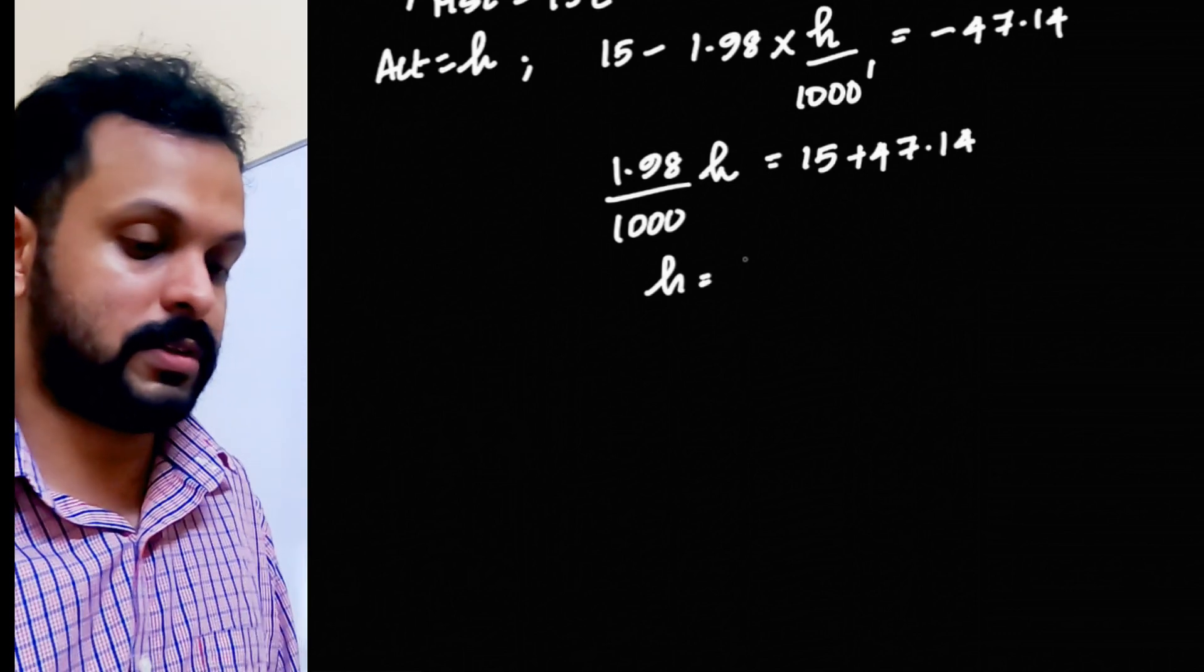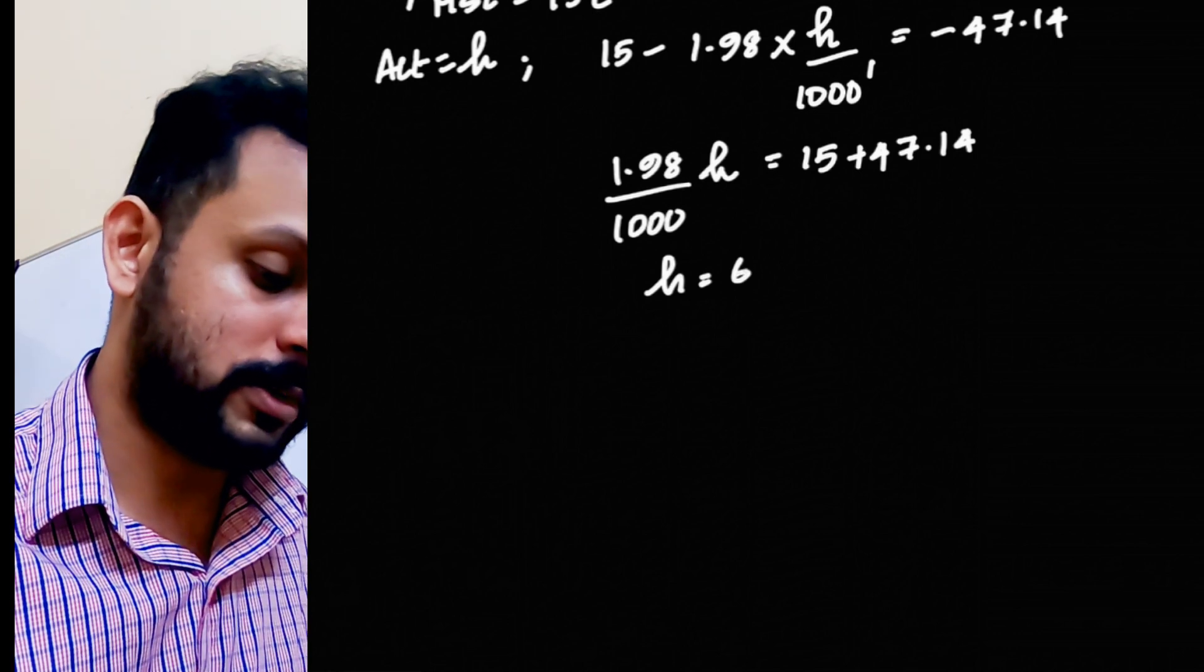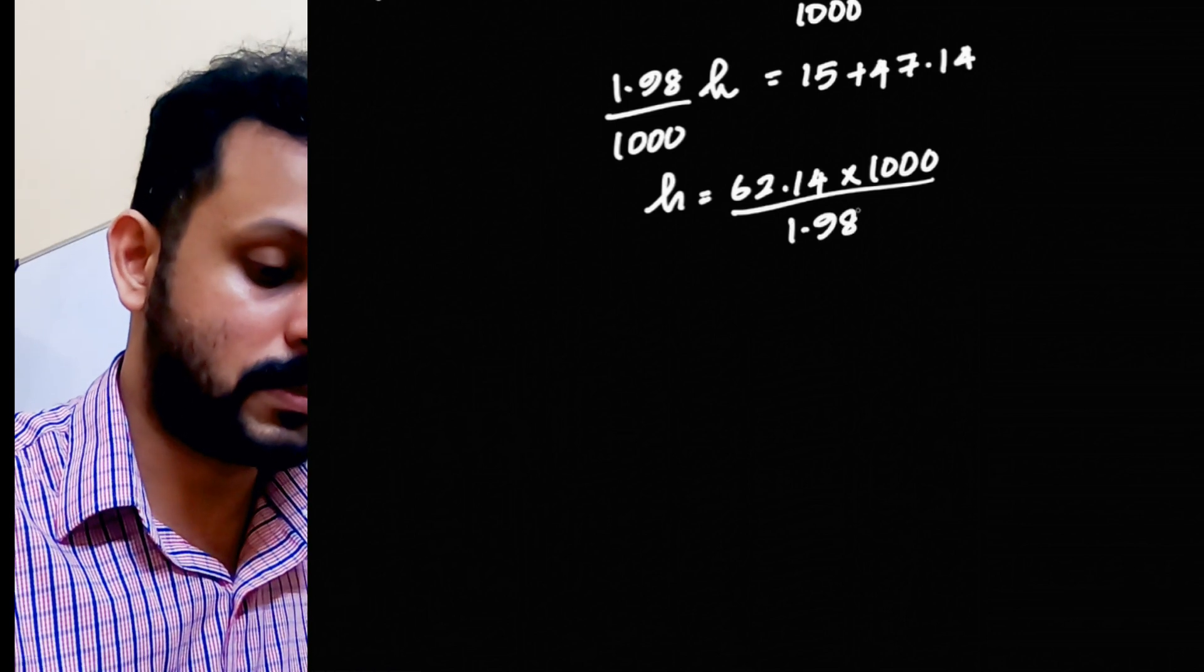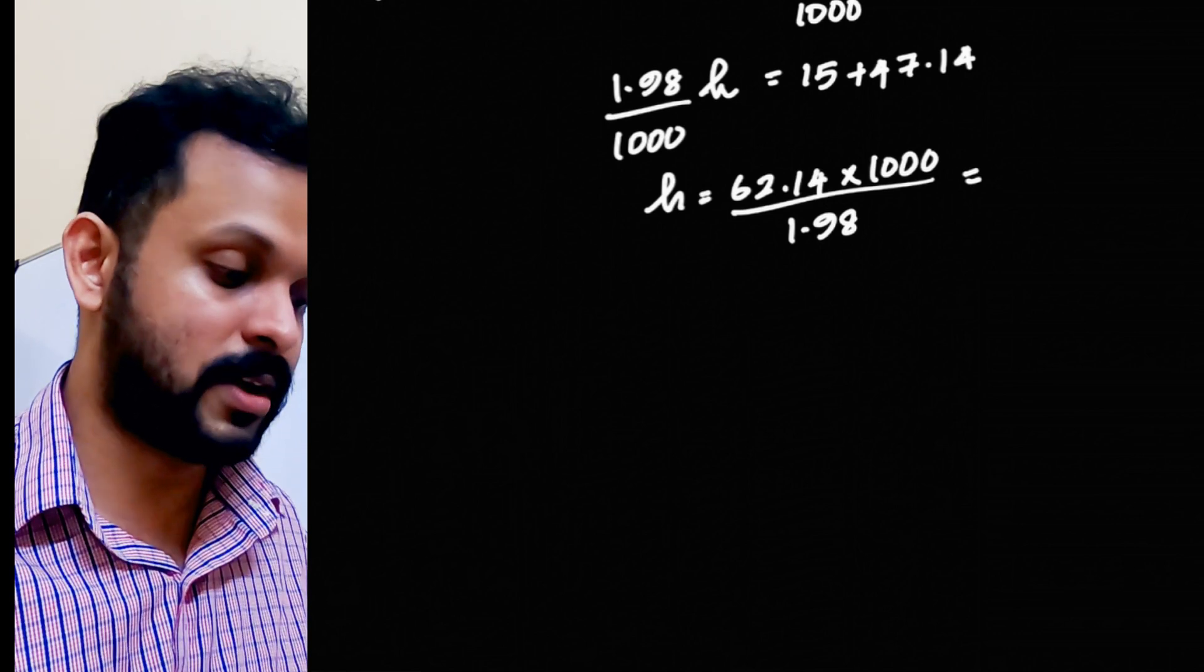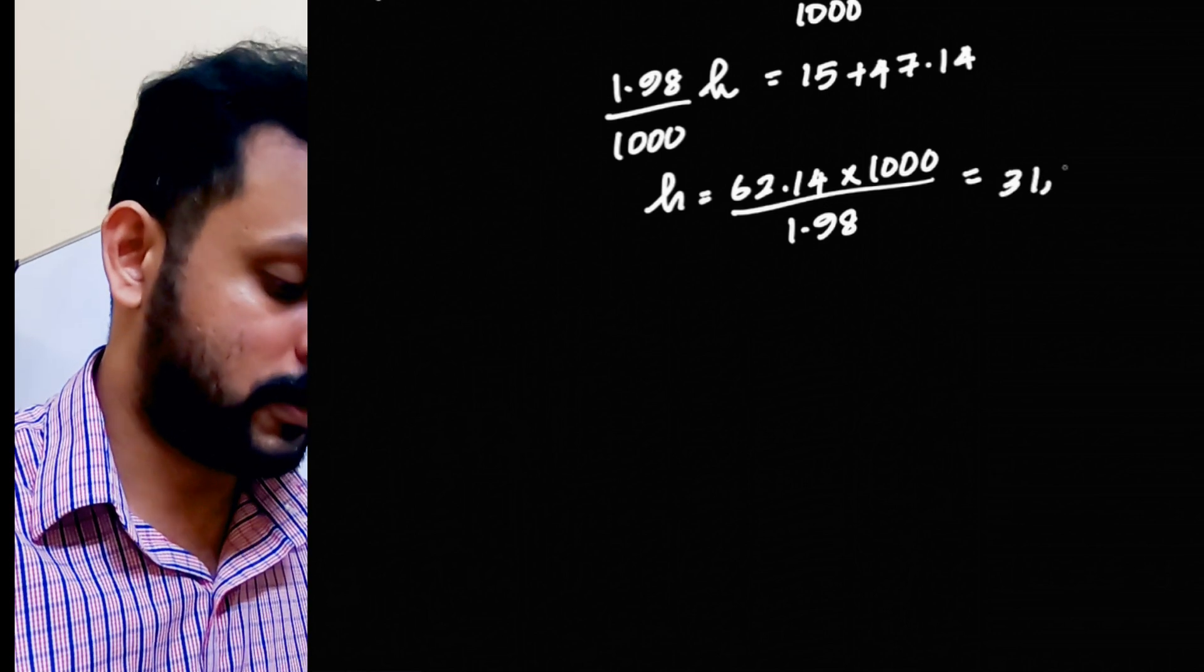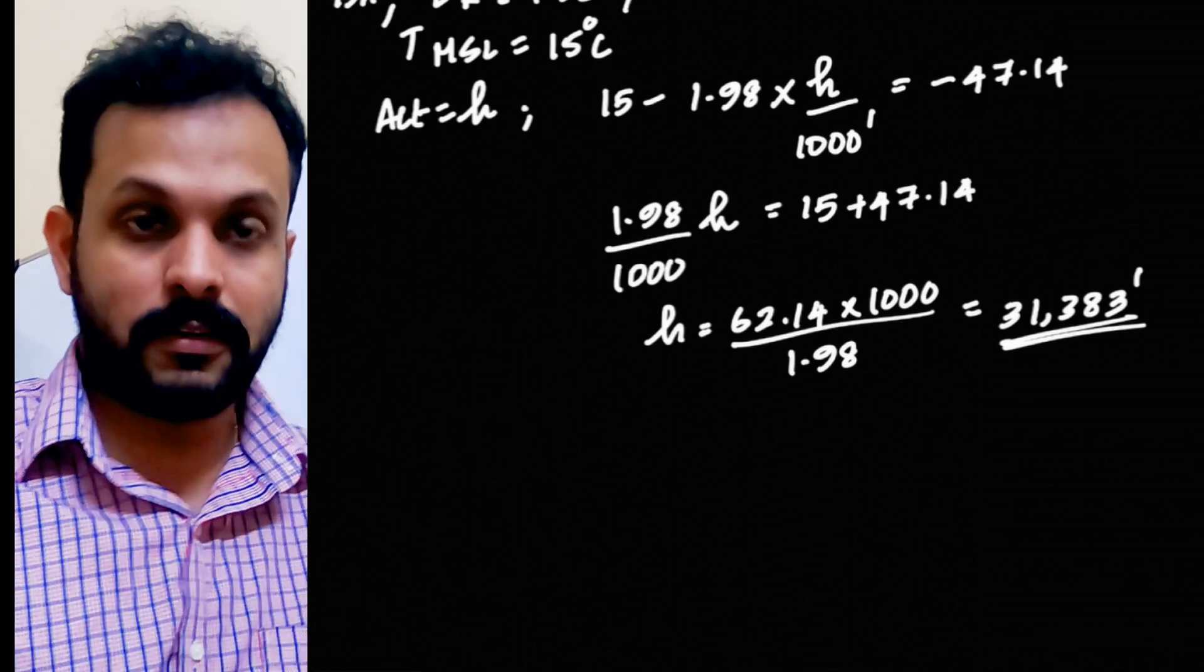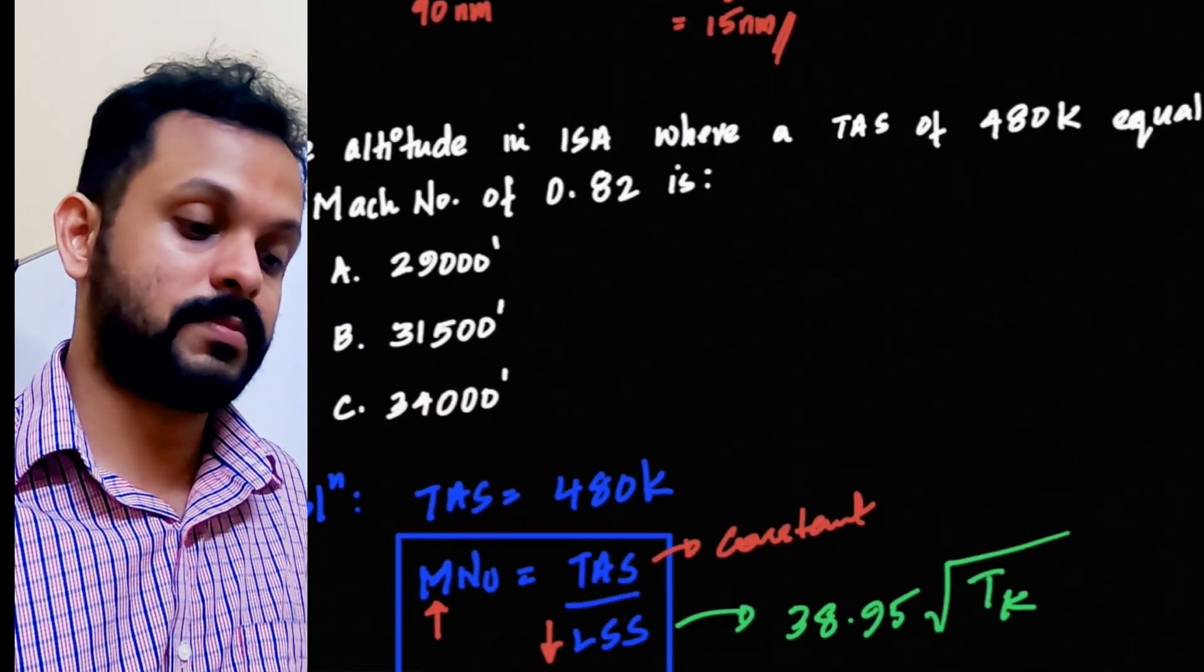Now, H is equal to, let's solve this equation. It becomes 15 plus 47.14 which is 62.14 multiplied with 1000 because the 1000 goes to the numerator divided by 1.98. Have a very thorough knowledge about your scientific calculator because it can be extremely helpful. So, 31,383 feet is the answer. At an altitude of 31,383 feet, you will be having a Mach number of 0.82 corresponding to a TAS of 480.